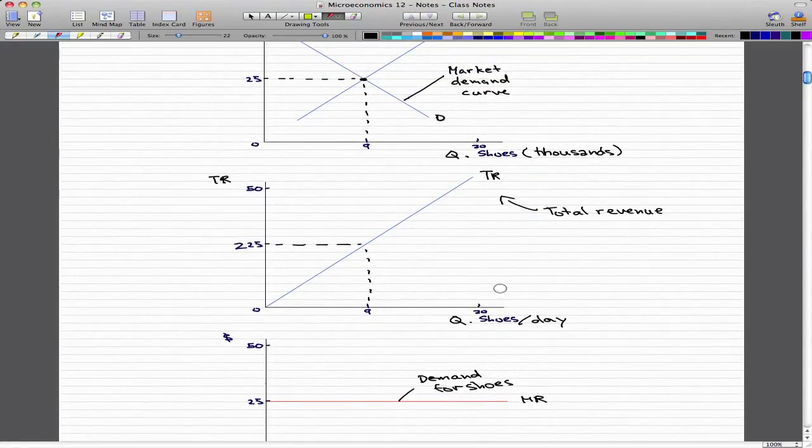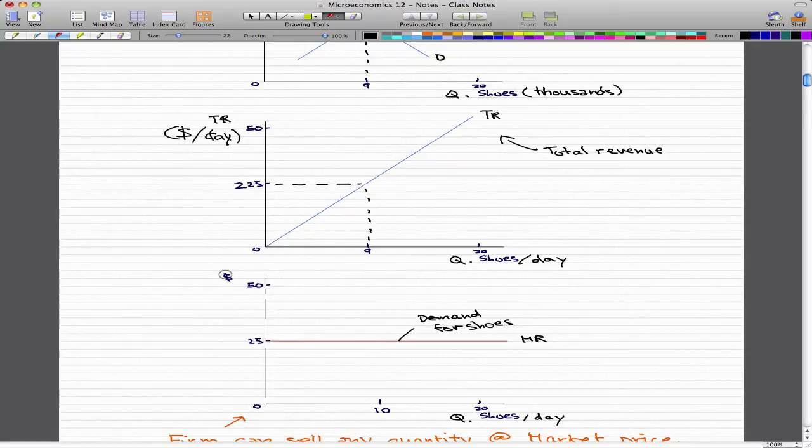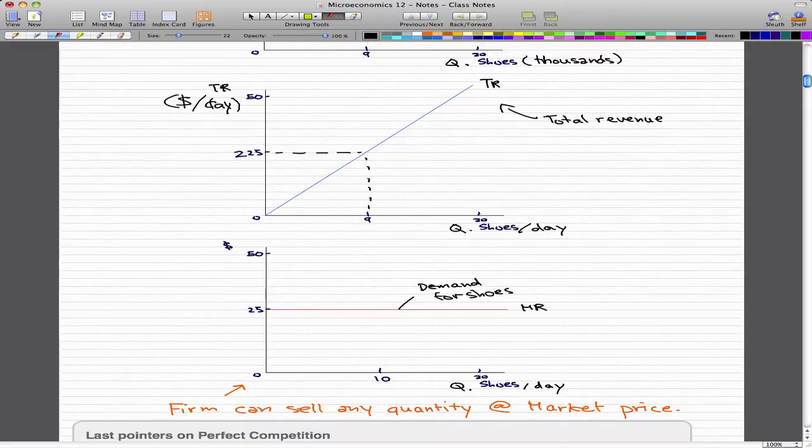The next graph is the total revenue curve, which shows the relationship between total revenue and quantity sold. The quantity of shoes sold per day is 9,000. Each day, the total revenue per day—wait, hold on, they're selling 9,000 shoes per day, so it's actually $225,000 per day if 9,000 pairs of shoes are sold per day.